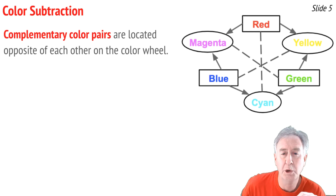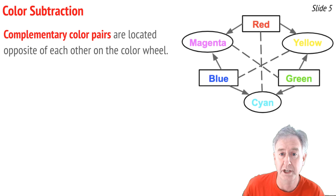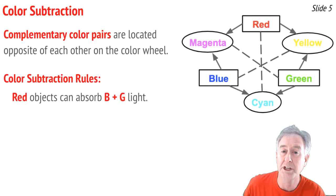You see a color wheel with three pairs of colors, which we refer to as complementary color pairs. They're located directly across from one another. They are red and cyan, blue and yellow, and green and magenta. The significance of complementary color pairs is that they help us predict what colors of light will be absorbed or subtracted by an object.